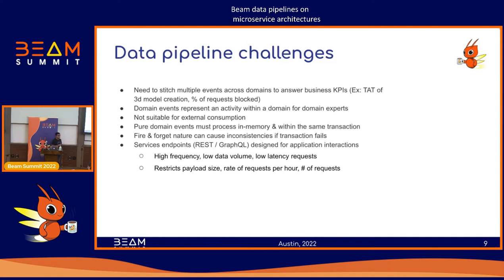Fundamentally, these domain events are also not suitable for usage outside the domain boundary. Another option is to create a data pipeline using microservices, but at a company of decent scale with large volumes of data, the services are typically used for application integration — high-frequency requests returning low volumes of data at low latency. When making data pipeline calls, you might be bombarding your infrastructure, which is not a good pattern.